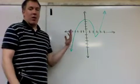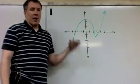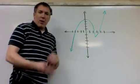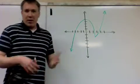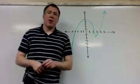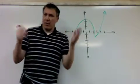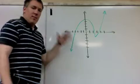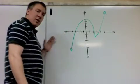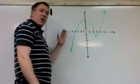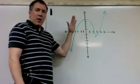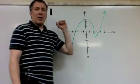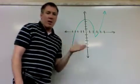Looking at this graph with a nice bounce in it, we're going to look at different points and estimate the slope of the tangent line visually. A tangent line is a line that touches the graph at one point, going in the same direction as the graph at that point.